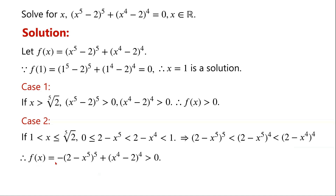So f(x) equals negative (2 minus x to the power of 5) to the power of 5, plus x to the power of 4, minus (2 to the power of 4), plus (2 minus x to the power of 5) to the power of 5, is less than (2 minus x to the power of 4) to the power of 4. So f(x) is greater than 0, meaning the equation has no solutions when x is in this interval.